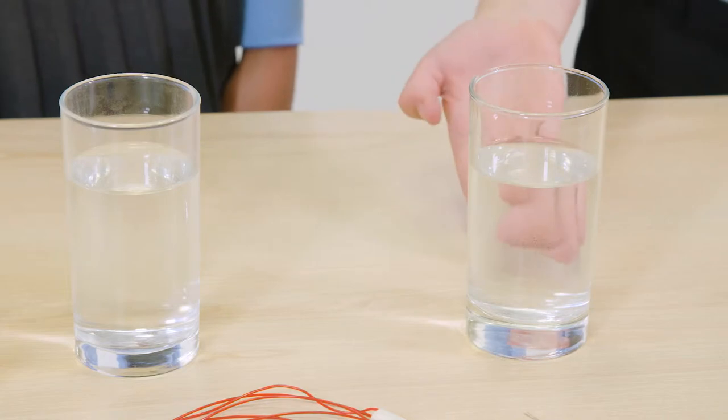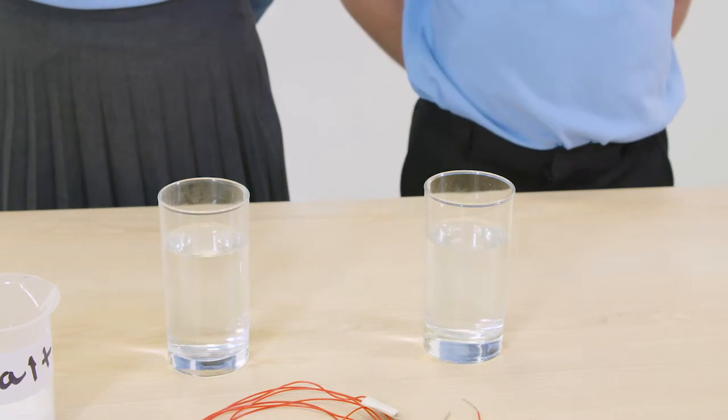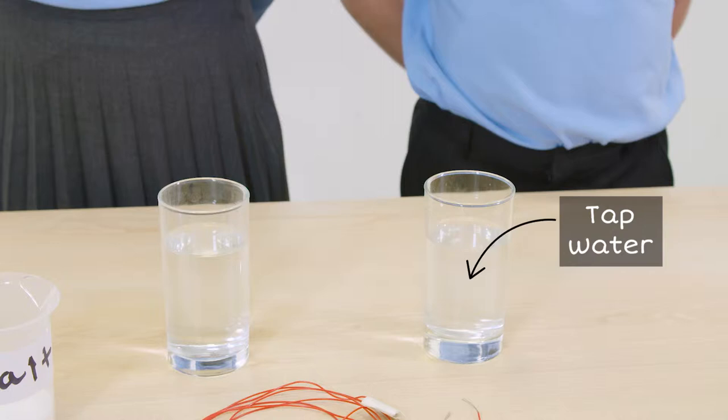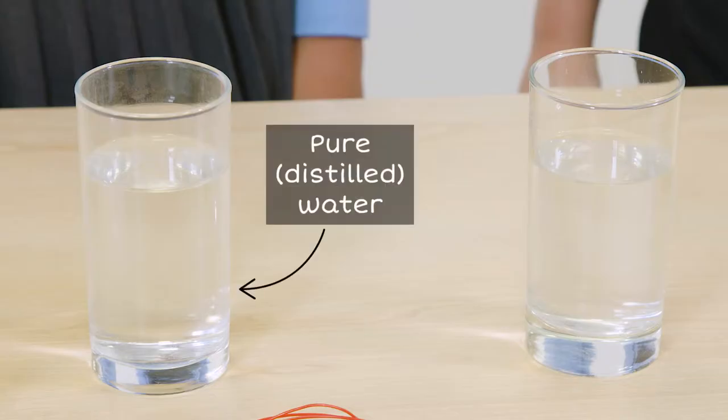I have a glass of tap water and a glass of distilled water. The water looks the same, but tap water is not pure. It has salts dissolved in it to kill bacteria and make it safe to drink. Pure, or distilled water, is water that has been boiled and the steam has been condensed. The condensed steam does not contain any dissolved salts.